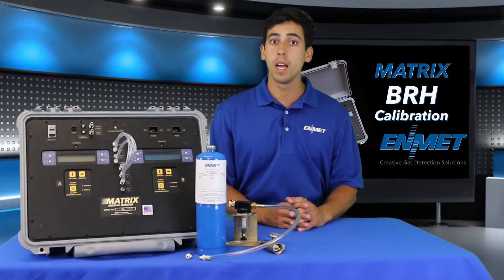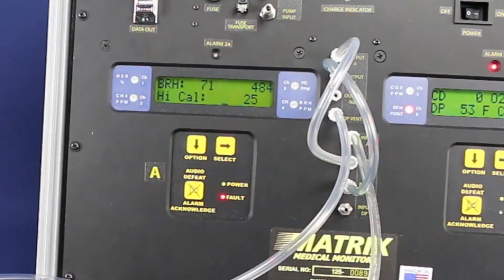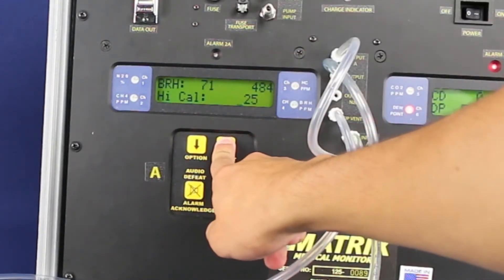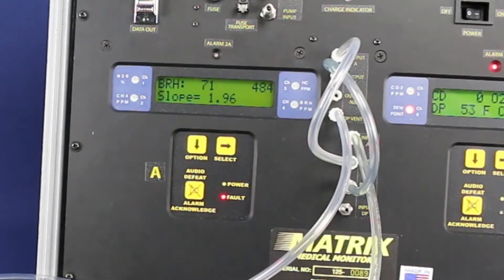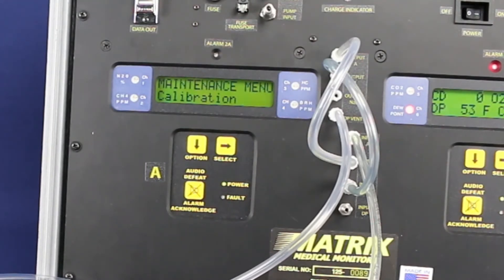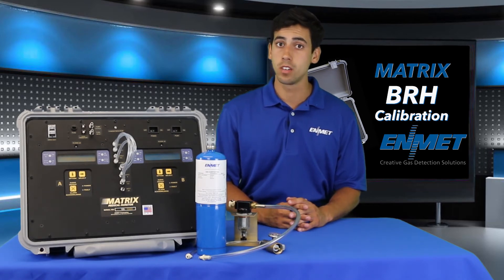Once the signal stabilizes after about four minutes, you will accept the calibration. To accept the calibration, use the select key to move the cursor over to the right until cal okay is displayed. The slope and the offset values will be briefly shown and it will return you to the maintenance menu. This completes the matrix calibration for the BRH sensor.